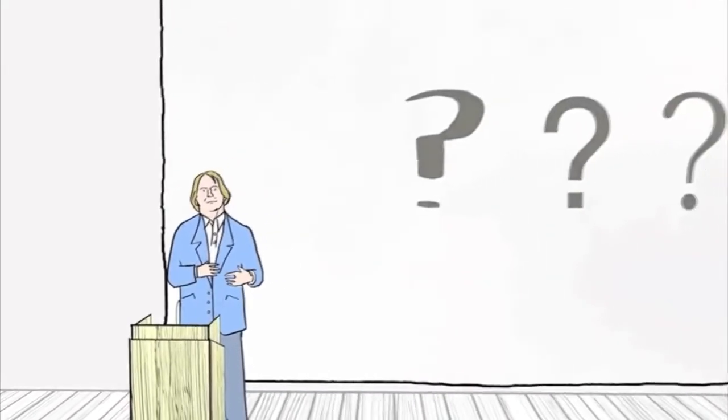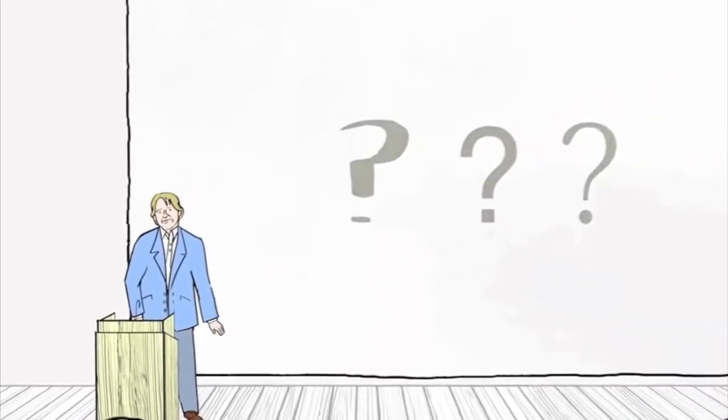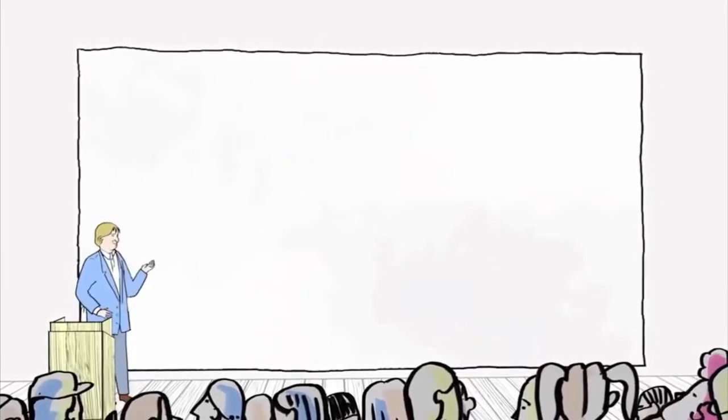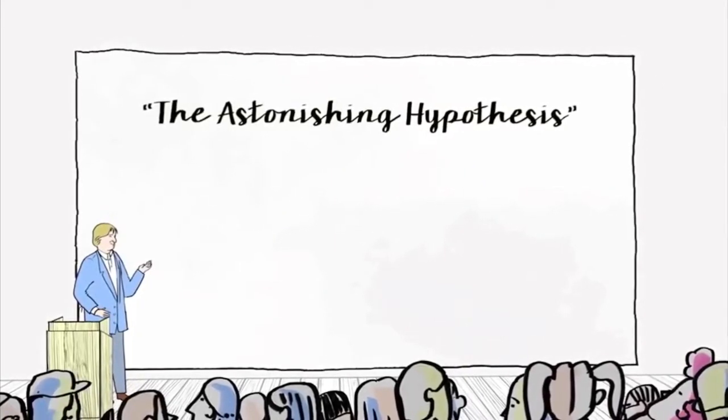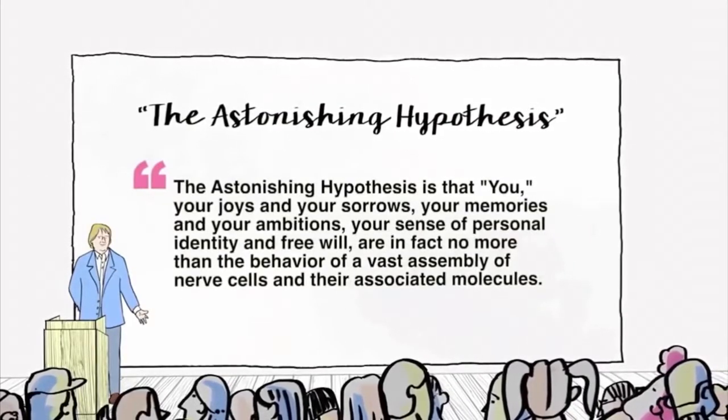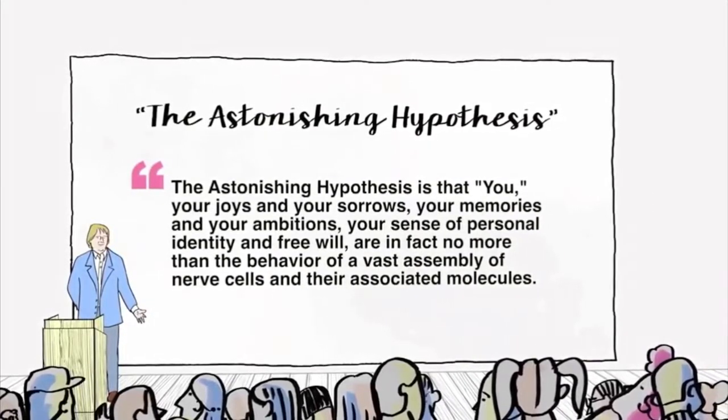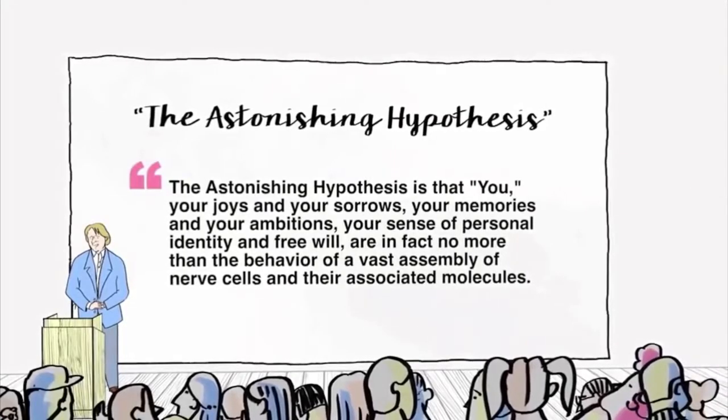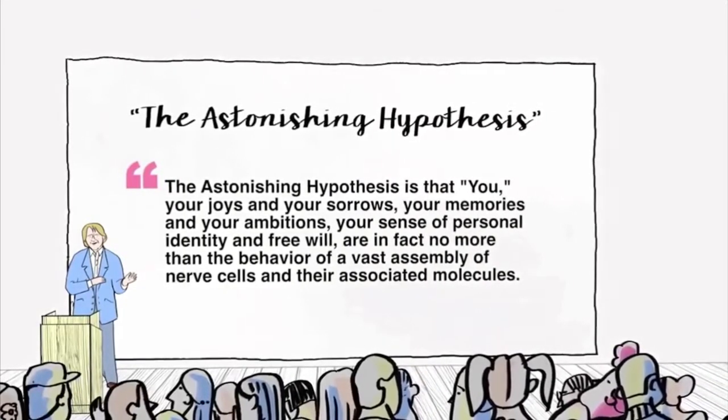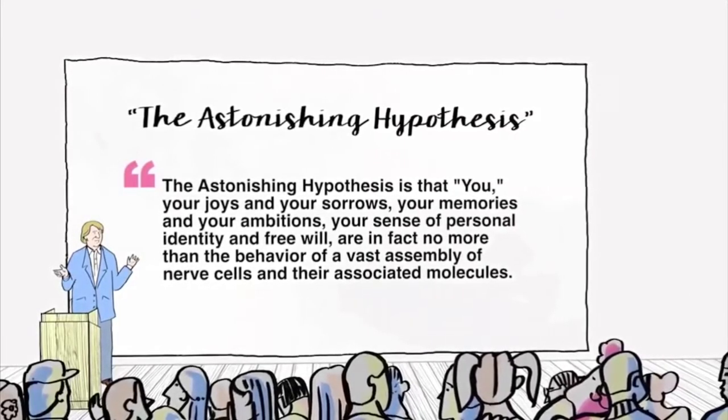And so the brain can have profound effects on who we are and what we are. This idea is nicely summarized by the Nobel Prize winning biologist Francis Crick. He calls it the astonishing hypothesis. As he writes, the astonishing hypothesis is that you, your joys and your sorrows, your memories and your ambitions, your sense of personal identity and free will,